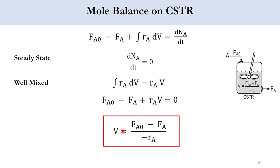So the equation becomes FA0 minus FA plus RA times V equals zero. Taking RA times V to the opposite side and dividing by minus RA gives V equals FA0 minus FA over minus RA. Here, minus RA represents the rate of disappearance of reactant A. That is the general mole balance equation for the CSTR.